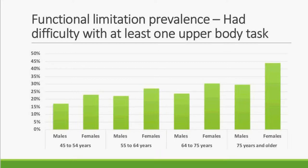The prevalence of questionnaire-based functional limitations in the tracking cohort is subdivided by the domains from the factor analysis. For having difficulty with at least one upper body task, you see the same trend as disability: prevalence increases across age groups in both males and females, with females consistently having more difficulty. The absolute amount of limitations is higher in all age and sex strata compared to ADL or IADL disability, indicating more people have upper body task limitations than disabilities.